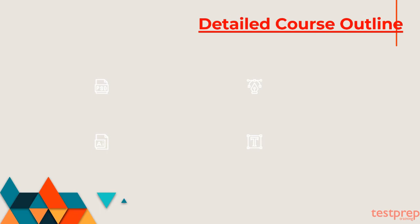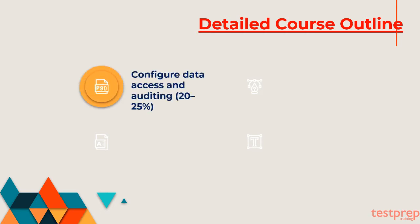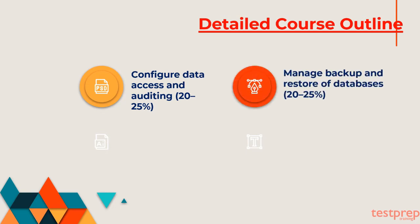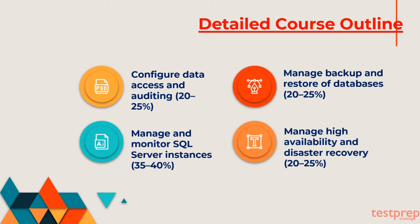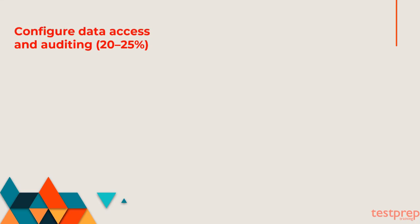The Administering a SQL Database Infrastructure 70-764 exam includes its objectives and subtopics. The detailed course outline is as follows: First, configure data access and auditing, which comprises 20–25% weightage. Second, manage backup and restore of databases, which comprises 20–25% weightage. Third, manage and monitor SQL Server instances, which comprises 35–40% weightage. Fourth, manage high availability and disaster recovery, which comprises 20–25% weightage. Let us now discuss about course outline topics in detail.